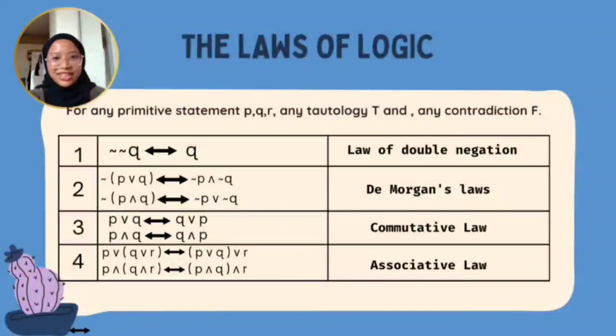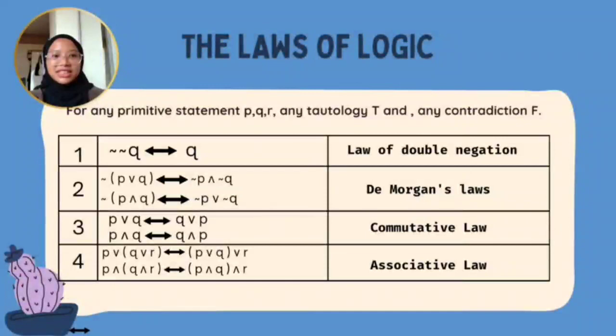The third law is the Commutative Law, which allows us to switch places between two statements. For example, if we have P and Q, using the Commutative Law we can switch it to Q and P. The symbol stays the same; only the statements change places.